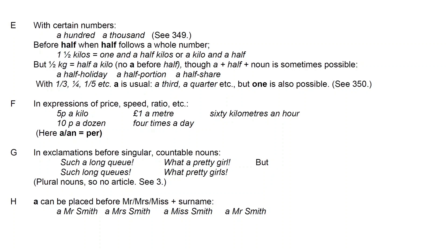There is an A after the half in 'half a kilo'. The same applies with other fractions, such as a third, a quarter, and a fifth. You can also say one quarter, one third, one fifth.